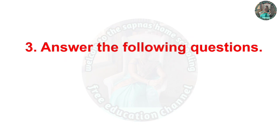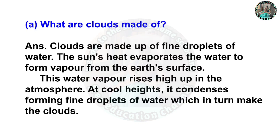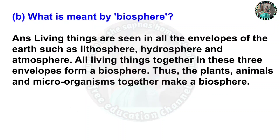Question three — answer the following questions. A: What are clouds made of? Answer: Clouds are made of fine droplets of water. The sun's heat evaporates the water to form vapor from the earth's surface. This water vapor rises high up in the atmosphere; at cool heights it condenses, forming fine droplets of water, which in turn make the clouds.